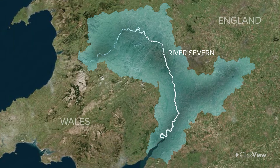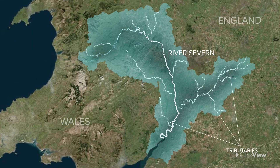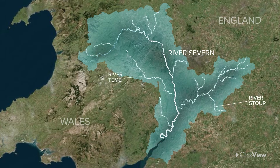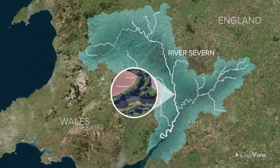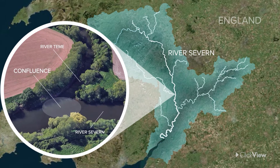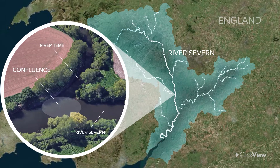Within a river's drainage basin, tributaries — small rivers and streams — also feed water into the main river. Some major tributaries of the River Severn are the rivers Stour, Teme and Wye. The point where each of these tributaries joins the Severn is known as a confluence.